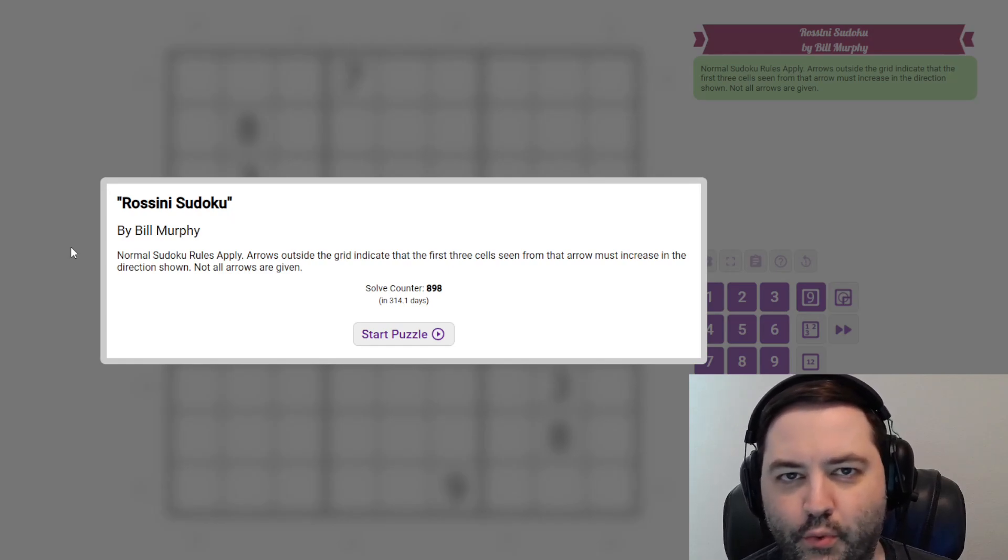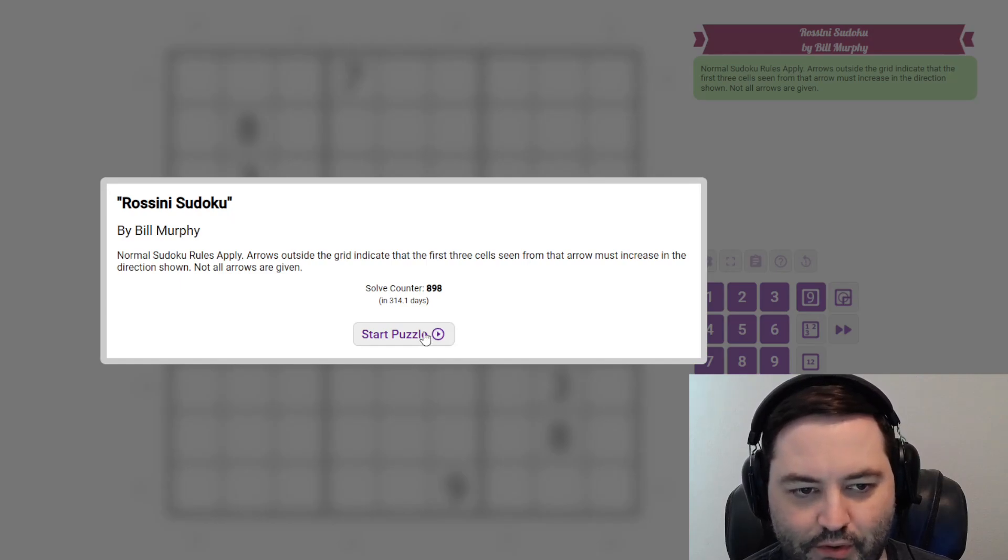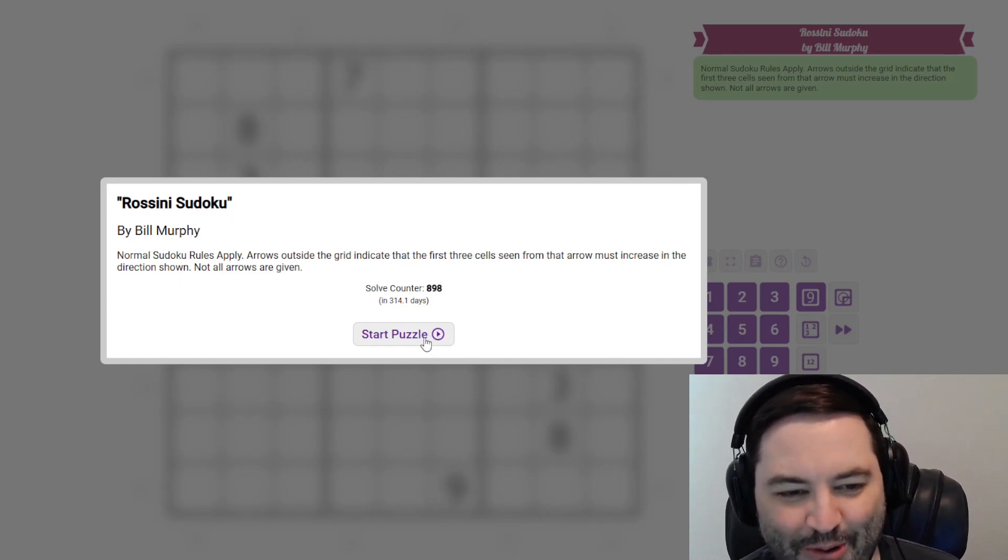Hi everyone, this is the Gas Walkthrough for June 22nd. I'm Philip Newman. Today I'm solving a Rossini Sudoku by Bill Murphy. I want to say Rossini, but I think Rossini is more correct, so that's what I'm going with.